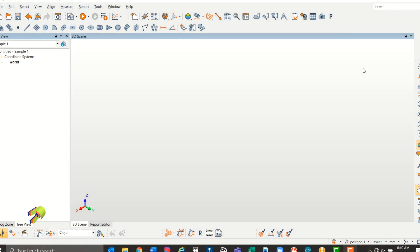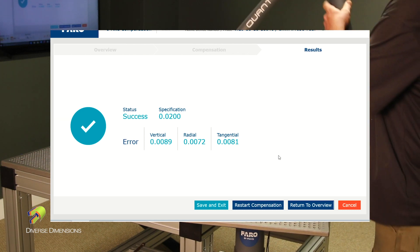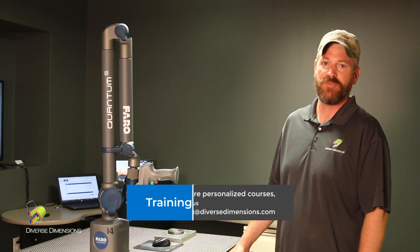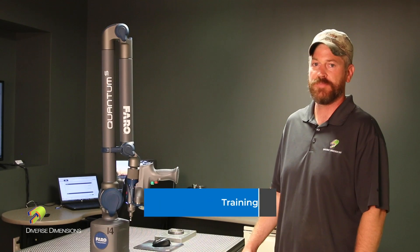Once we get done with that, let go of the green button, click the red button, and it'll give you the results. Save and exit. We should be good to go. If you want any more information and more training videos, check out our website, diversedimensions.com. Thanks for watching.